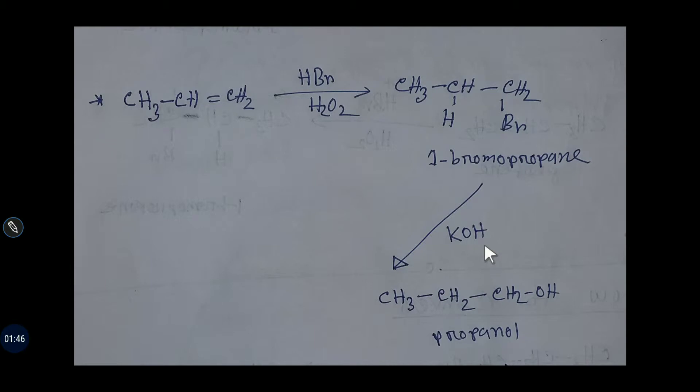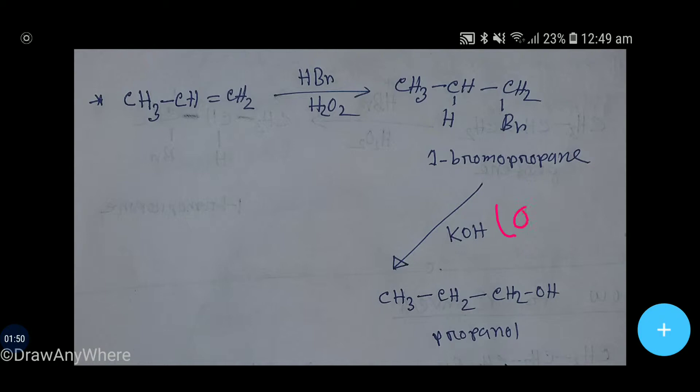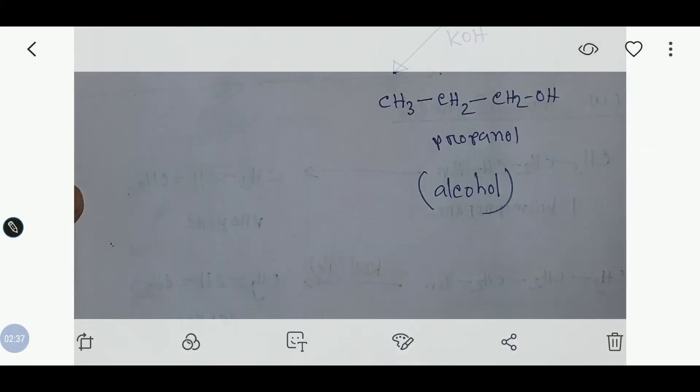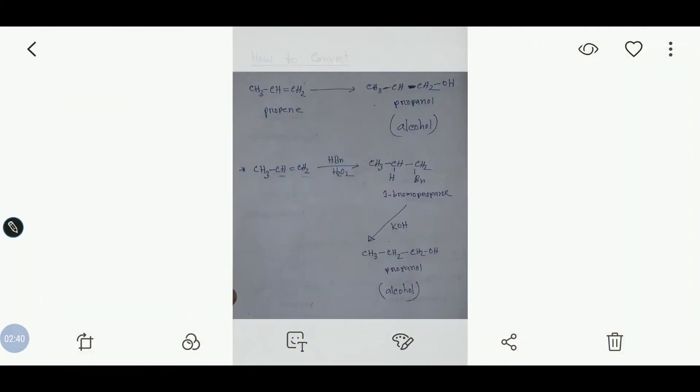Now if we add aqueous potassium hydroxide, then this bromine will be replaced by OH and you will get alcohol propanol. So easily you can convert propane to alcohol. Now we will see the vice versa.